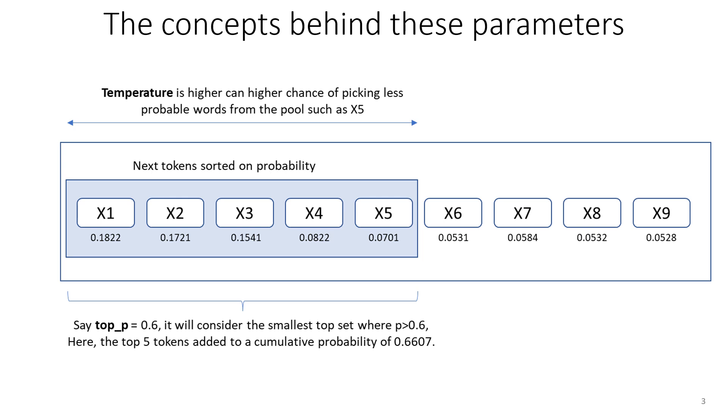Tokens X1, X2, X3, X4, and X5 will be chosen as the pool where their cumulative probability is 0.6607, which is greater than 0.6. So with the Top_P, the pool will be chosen as tokens X1 to X5. Basically, this will be the pool from which the next token will be picked up.